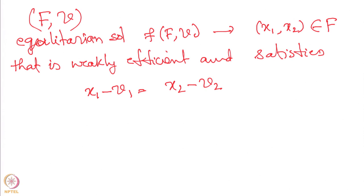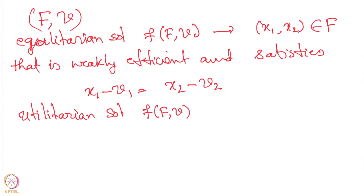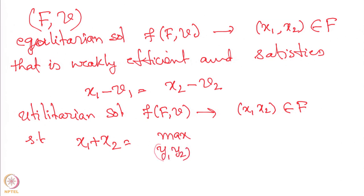The utilitarian solution of (F, v) is the point (x1, x2) in F such that x1 + x2 is maximized over all (y1, y2) in F — that is, it maximizes the total sum y1 + y2. This captures the idea of maximizing total welfare without hurting the other player.